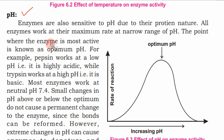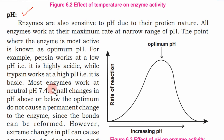All enzymes have a particular pH at which they work at maximum rate — this is the optimum pH. For example, pepsin works at a low, acidic pH, while trypsin works at a basic pH. Most enzymes work at neutral pH 7.4.